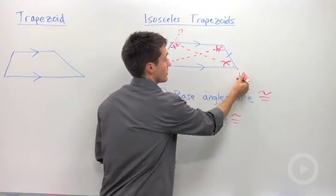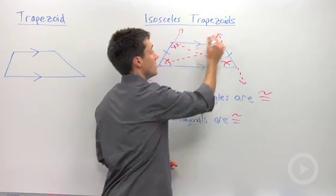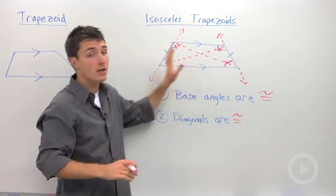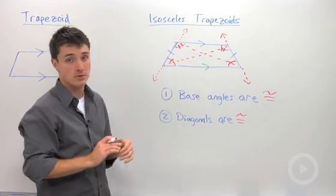and these two same side interior angles are also going to be supplementary. So a couple of key things about the trapezoid when you have two legs that are congruent in a trapezoid.